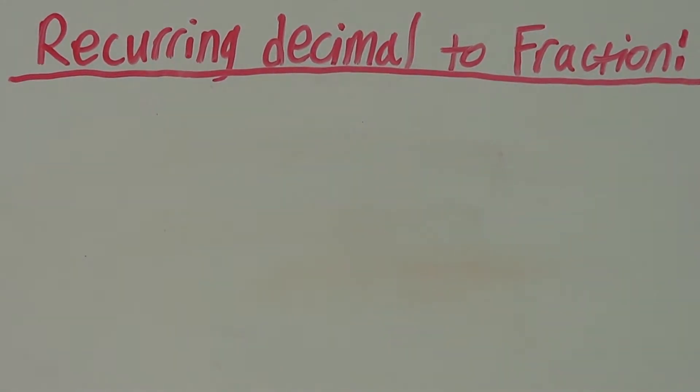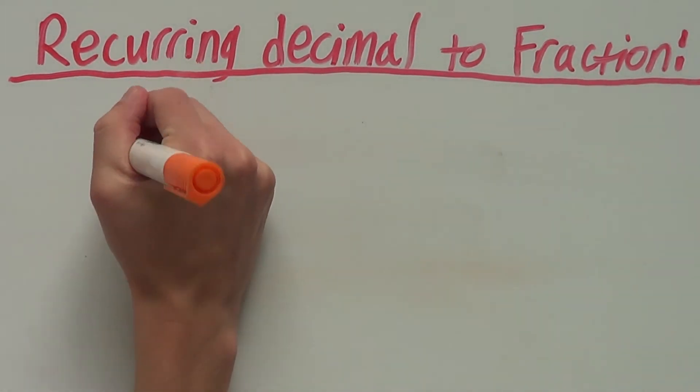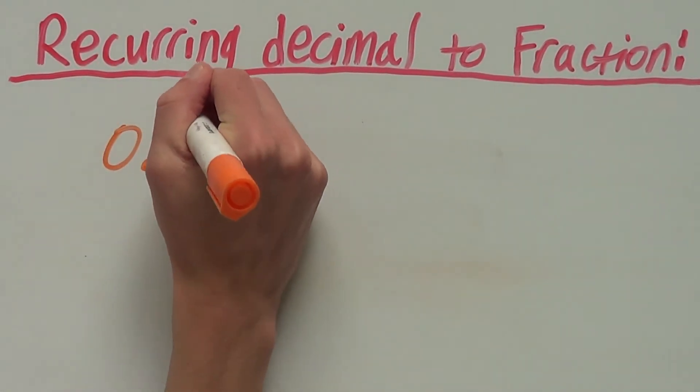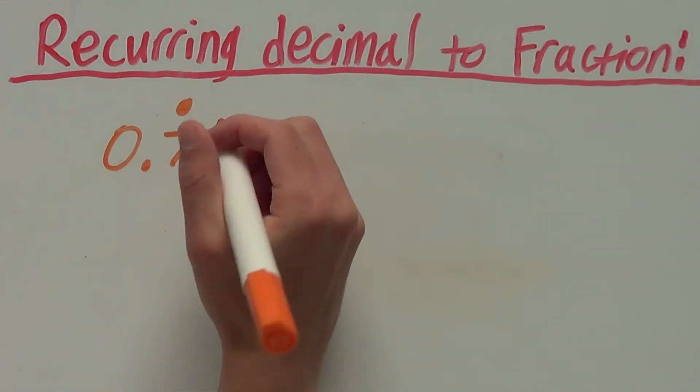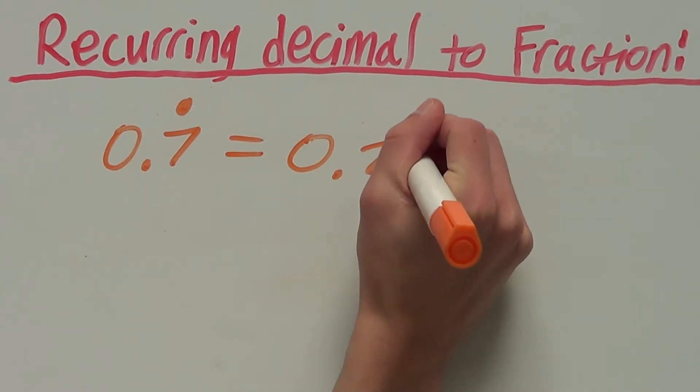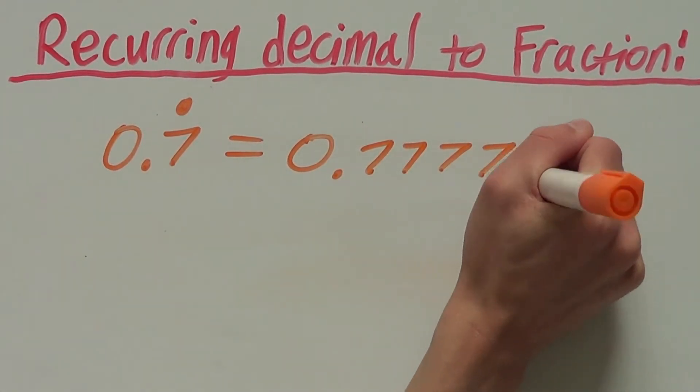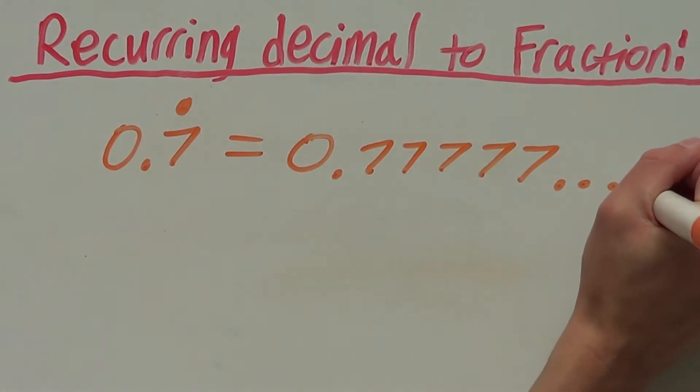I think the best way to learn how to do this is by looking at an example. So, let's say we have 0.7 recurring. This dot up here means that that 7 is recurring. So, this is 0.77777 going on forever.